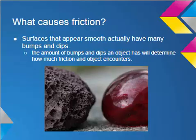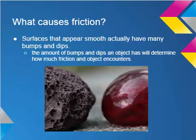Friction happens because the surfaces of objects have bumps and dips in them. You might not be able to see these bumps and dips with the naked eye, but if you viewed the objects under a strong microscope, you would. The amount of bumps and dips an object has will determine how much friction it encounters.